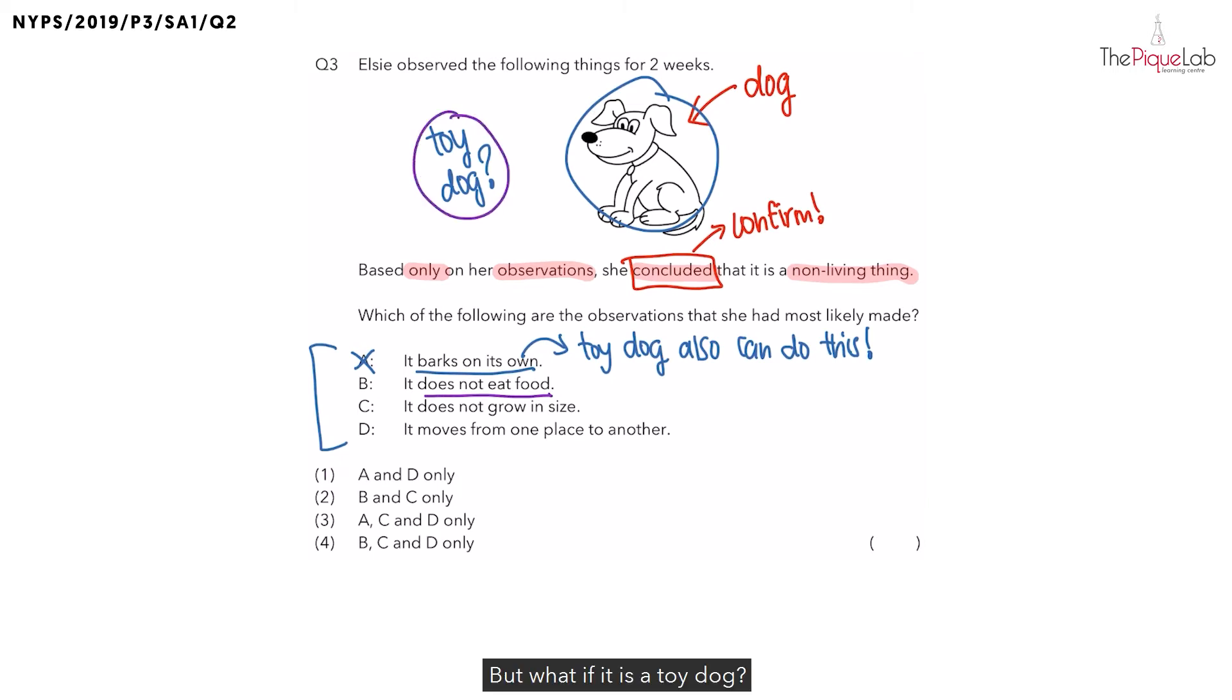But what if it is a toy dog? If this dog is a toy, does it need to eat food? The toy dog would not need to eat food. So this second observation actually helps Elsie to confirm that this is a non-living thing.